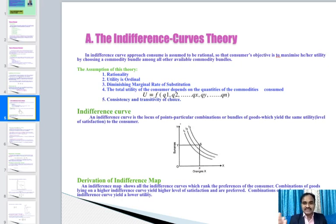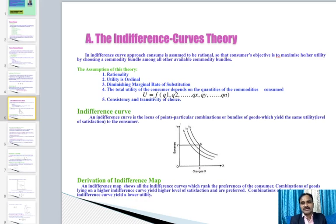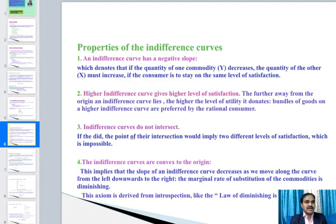Higher indifference curves (IC2, IC3) show higher levels of satisfaction; lower indifference curves show lower satisfaction. The indifference map shows all indifference curves ranking consumer preferences. Combinations of goods on a higher indifference curve yield higher utility and are preferred; combinations on a lower indifference curve yield lower utility.